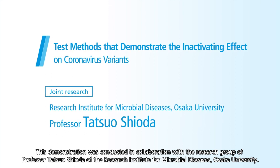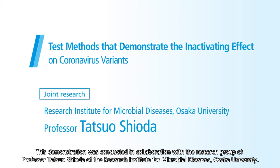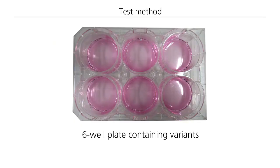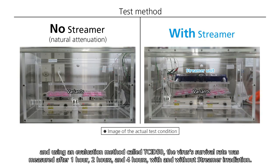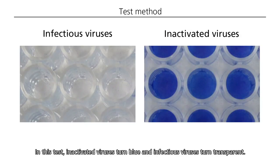This demonstration was conducted in collaboration with the research group of Professor Tatsuo Shioda of the Research Institute for Microbial Diseases, Osaka University. The virus variants were placed in a plate inside a streamer testing device, and using an evaluation method called TCID-50, the virus's survival rate was measured after one hour, two hours, and four hours with and without streamer irradiation. In this test, inactivated viruses turn blue and infectious viruses turn transparent.